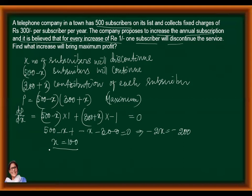So 100 subscribers will discontinue. So let us verify. dP/dx first derivative is equal to minus 2X plus 200. Then what will be second derivative? Second derivative will be minus 2. So maximum verified.